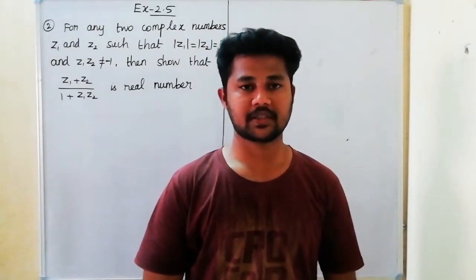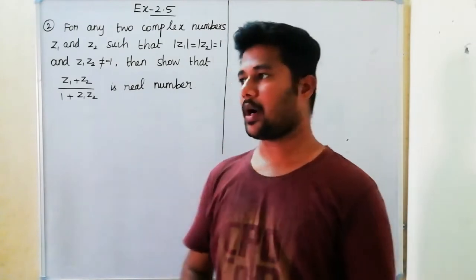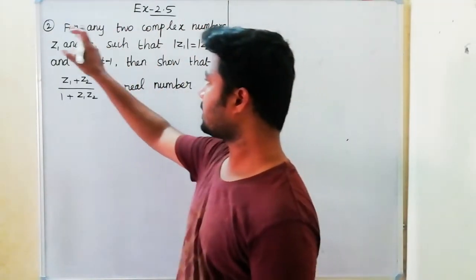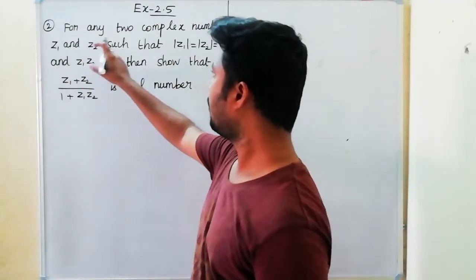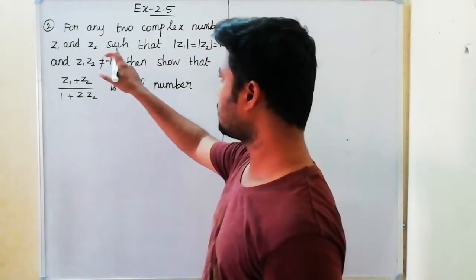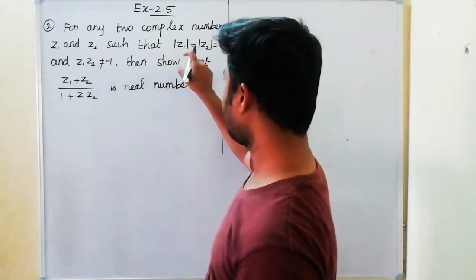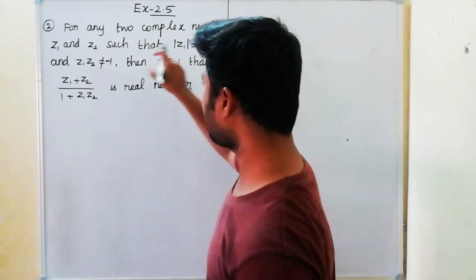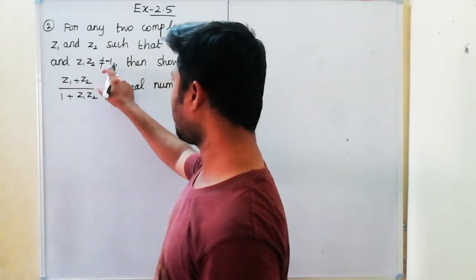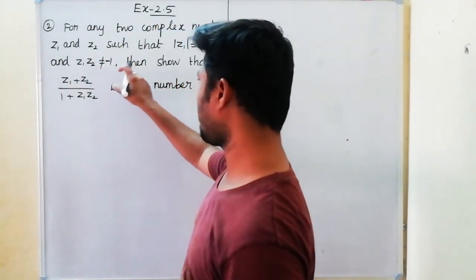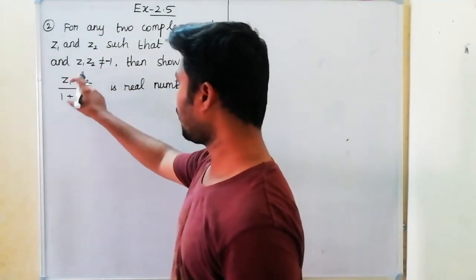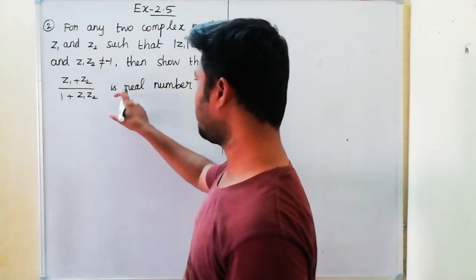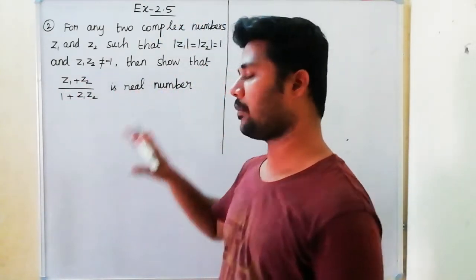Welcome back. The next problem is Exercise 2.5. For any two complex numbers z1, z2 such that modulus z1 equals modulus z2 equals 1, and z1·z2 is not equal to minus 1, then show that (z1 plus z2) divided by (1 plus z1·z2) is a real number.